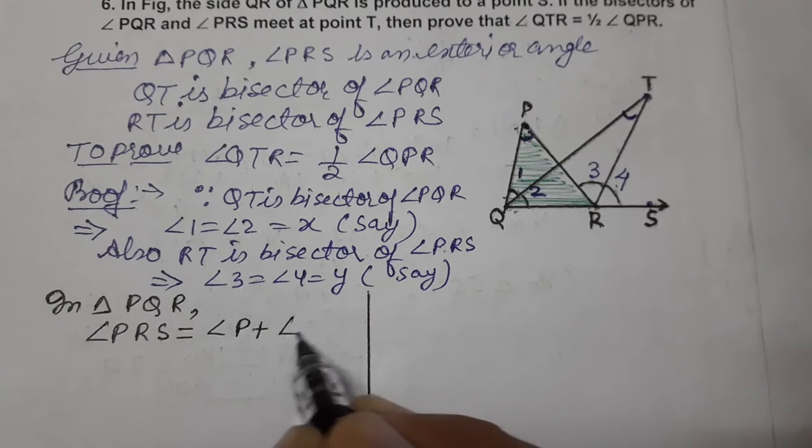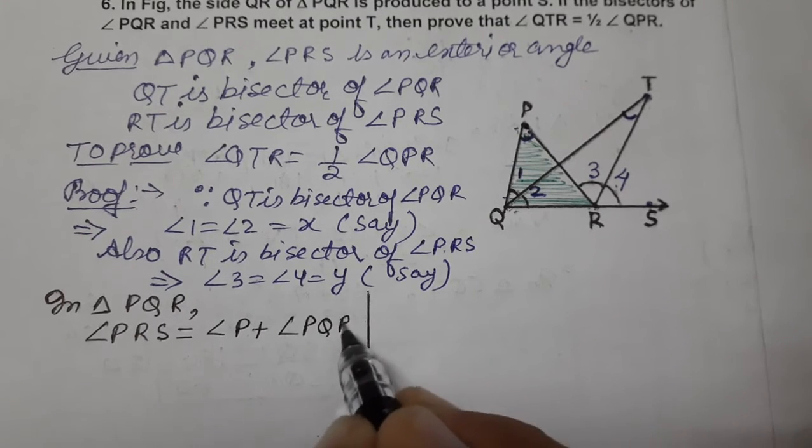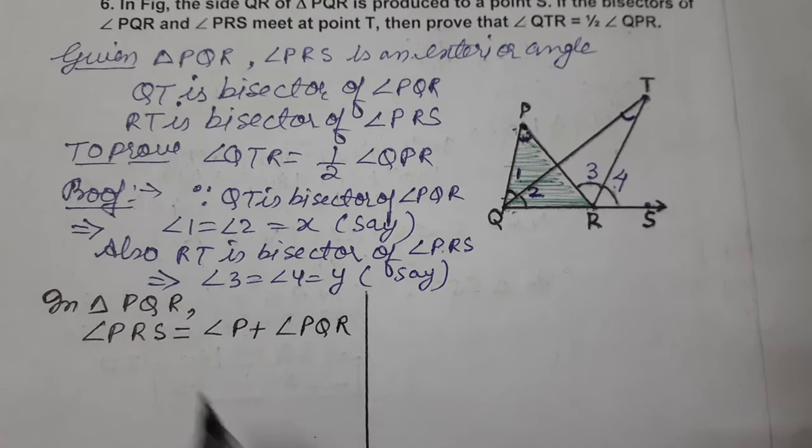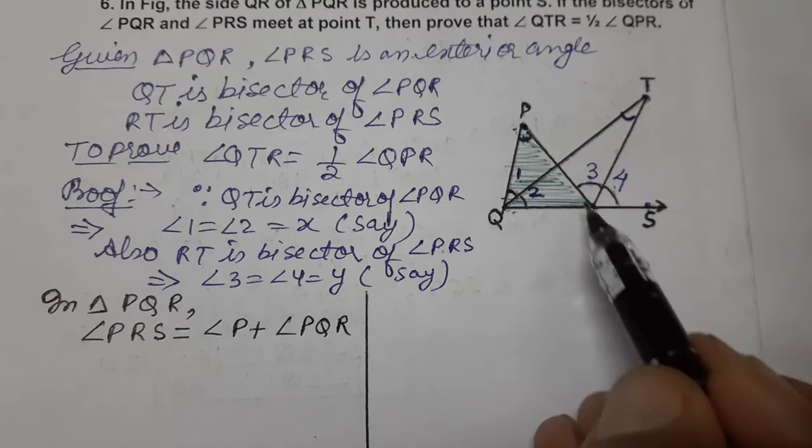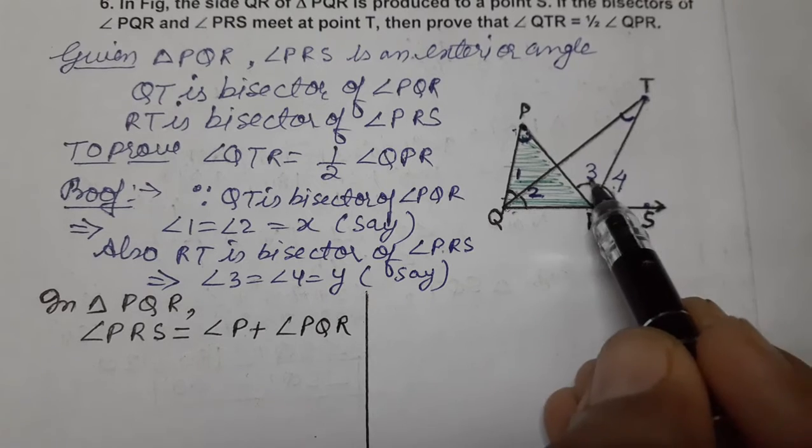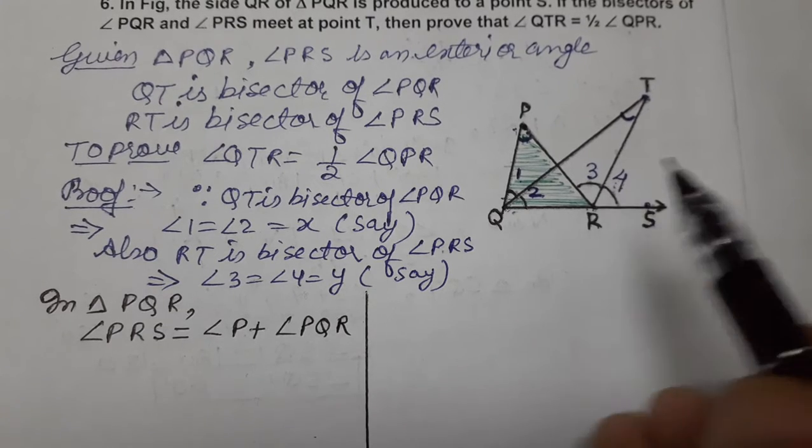Angle P we write fully as angle PQR. PRS is angles 3 and 4, means angle 3 plus angle 4.